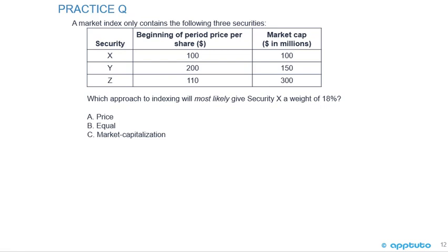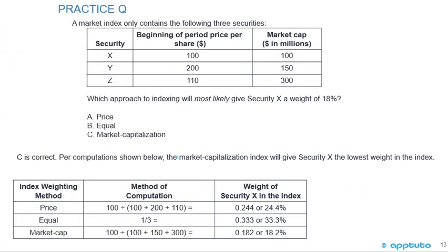The last practice question for this LOS: a market index contains three securities. Security X has a beginning price per share of 100 and a market cap of 100 million. Security Y has a beginning price of 200 and a market cap of 150 million. Security Z has a beginning price of 110 and a market cap of 300 million. Which approach to indexing will most likely give security X a weighting of 18%? A, price weighted; B, equal weighted; or C, market capitalization weighted.